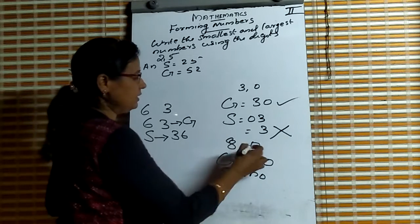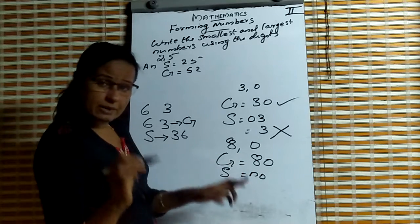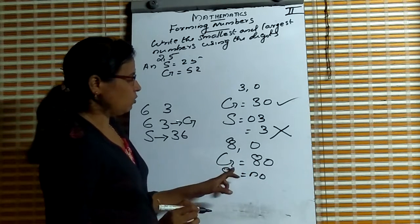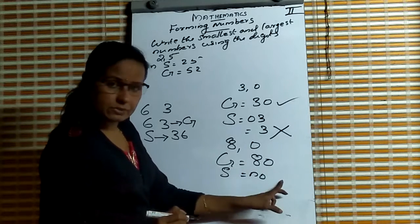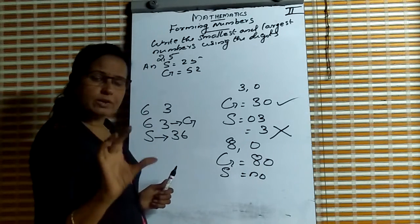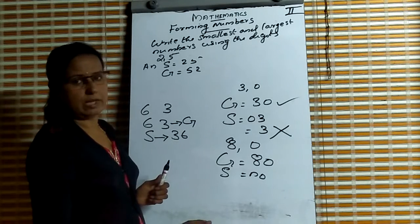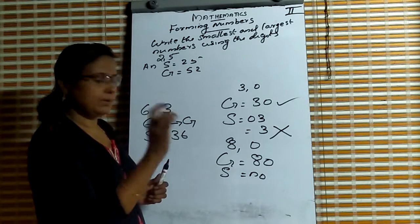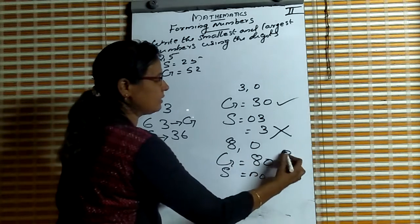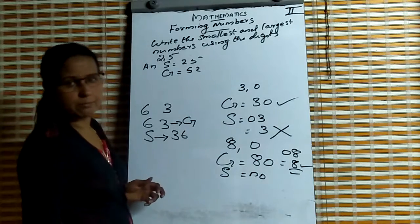So, in the case of 0, if one of the digits is 0, we have only the greatest number. There is no smallest two-digit number. For example, 0 and 8 means 8, which is only a one-digit number. So we have only one number.